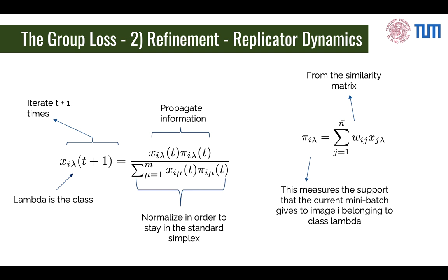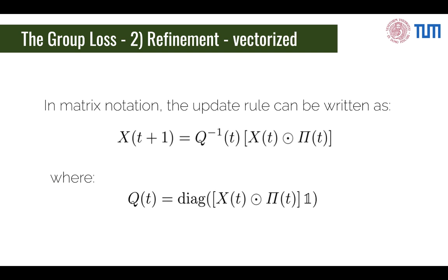Essentially, this is a weighted sum of all other probabilities. If image i is very similar to some other image, and that image has a very high probability for some class λ, then that image is going to affect i being classified as class λ, increasing the value of π_i_λ. In other words, π_i_λ measures the support that the current mini-batch gives to image i for belonging to class λ — it measures whether the mini-batch agrees that image i should pick class λ. We do this for all images in the mini-batch in a fast vectorized procedure, and it is a very cheap computation that barely increases the time to perform forward and backward passes.